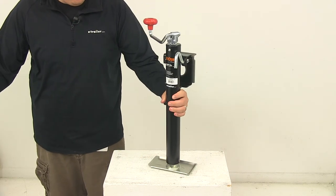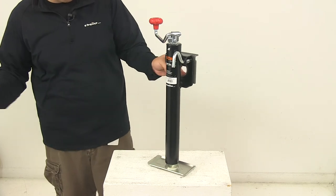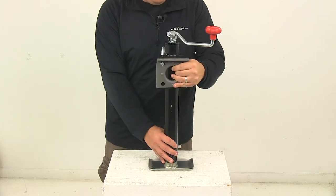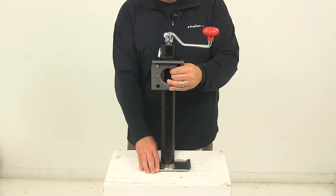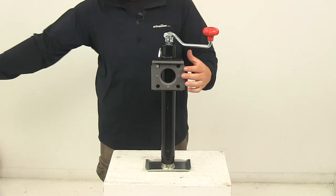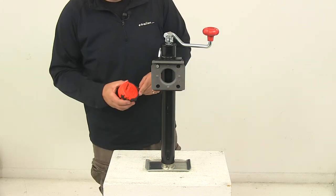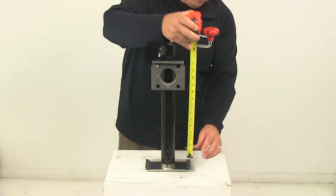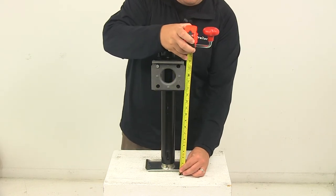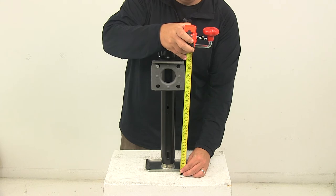Now I did some measurements for you. With the jack in the fully retracted position, I took a measurement from the bottom of the foot plate to the center of this mount. When I did that, I got a measurement of 16 inches.